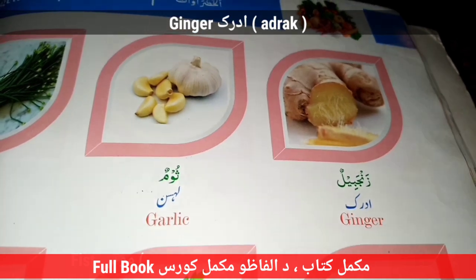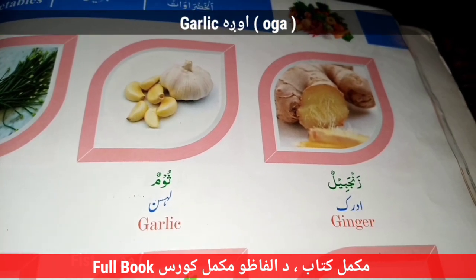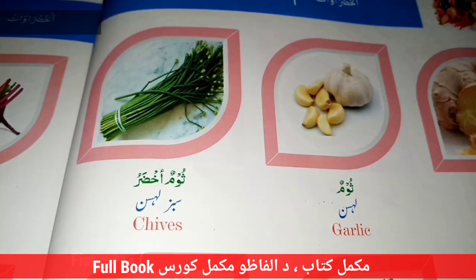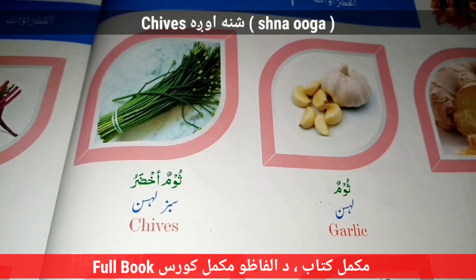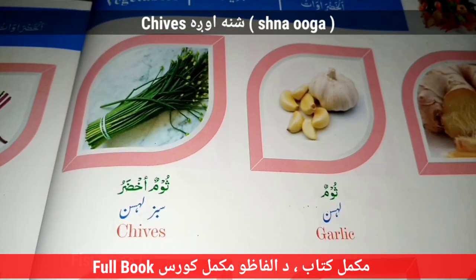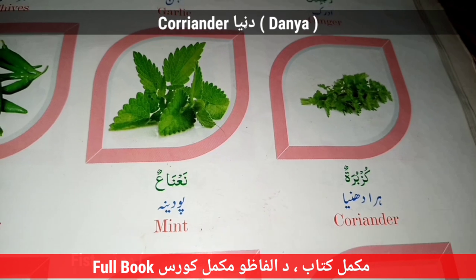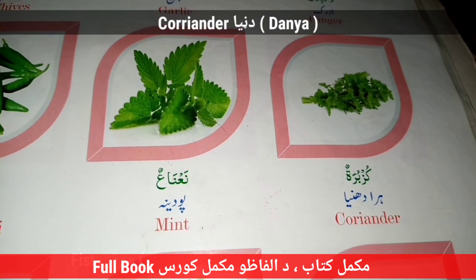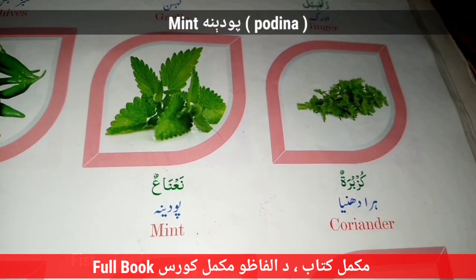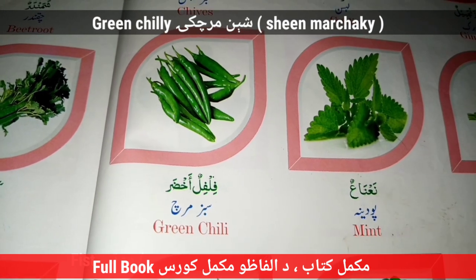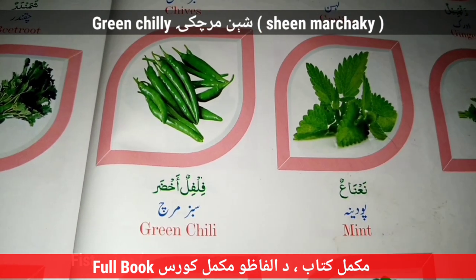Ginger — Adrak. Garlic — Uga. Chives — Shna. Coriander — Dhania. Mint — Pudina. Green Chili — Sheen Marchake.